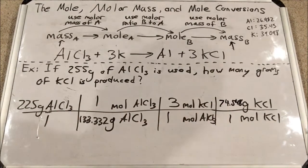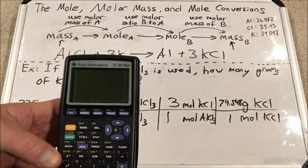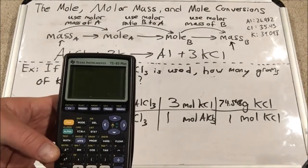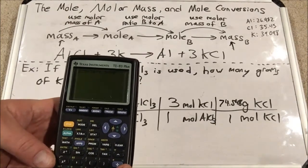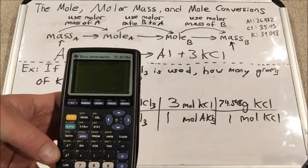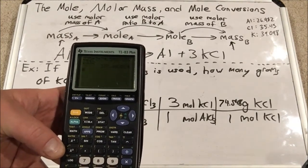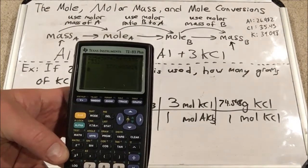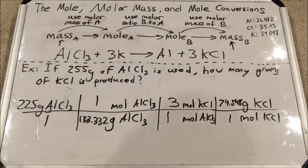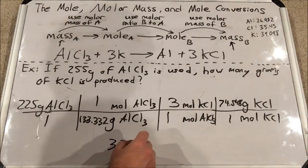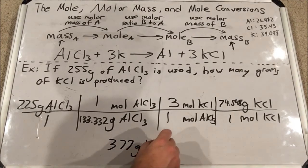I multiply twice and divide once: 255 times 3 times 74.548, then divide by 133.332. That gives 377.403 grams KCl. I'm allowed three significant figures based on my original measurement of 255, so I round to 377 grams of KCl.